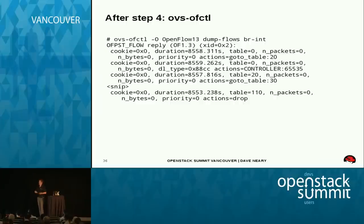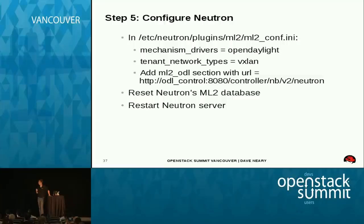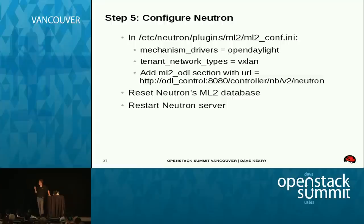Then you configure Neutron. There's an ini file where you set the mechanism driver to OpenDaylight, your tenant network type to VLAN, and the API endpoint: odl-control-host:8080/controller/nb/v2/neutron. That's just the API endpoint exposed by OpenDaylight. And then you're done.